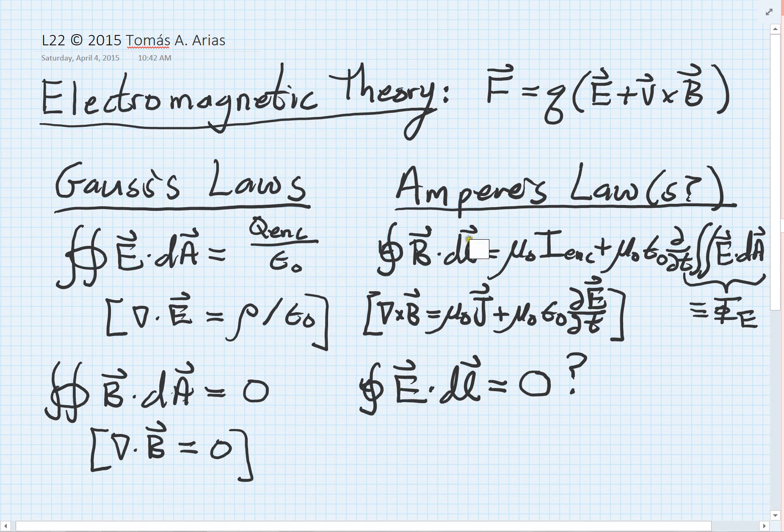If we were to take a closed loop integral not of the magnetic field but of the electric field, that as we know simply corresponds to adding up the voltages going around some closed loop. Right now we tend to assign zero value to that, but that's something we might want to reinvestigate, because we see that the magnetic field's closed line integral involves a series of terms, one involving a flow of charge.